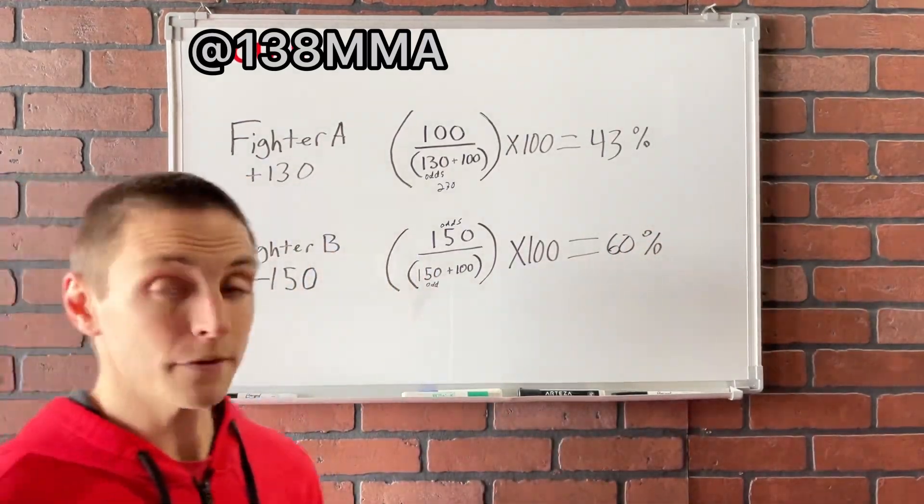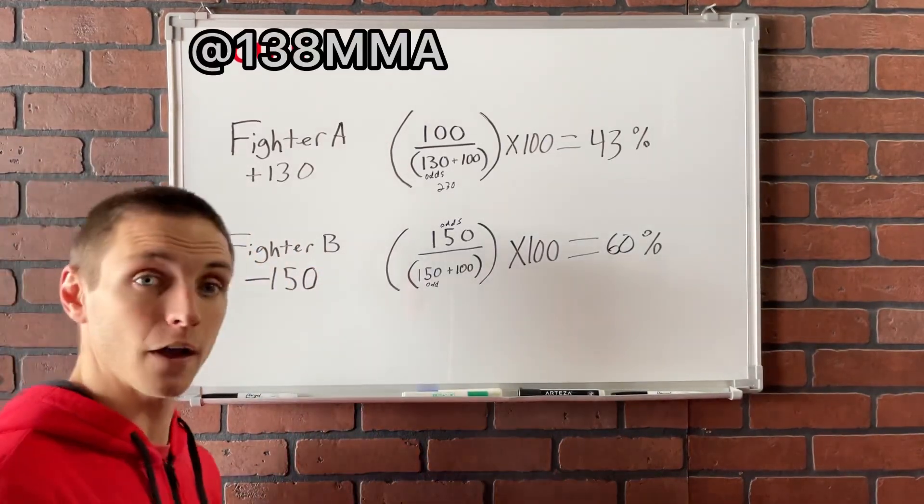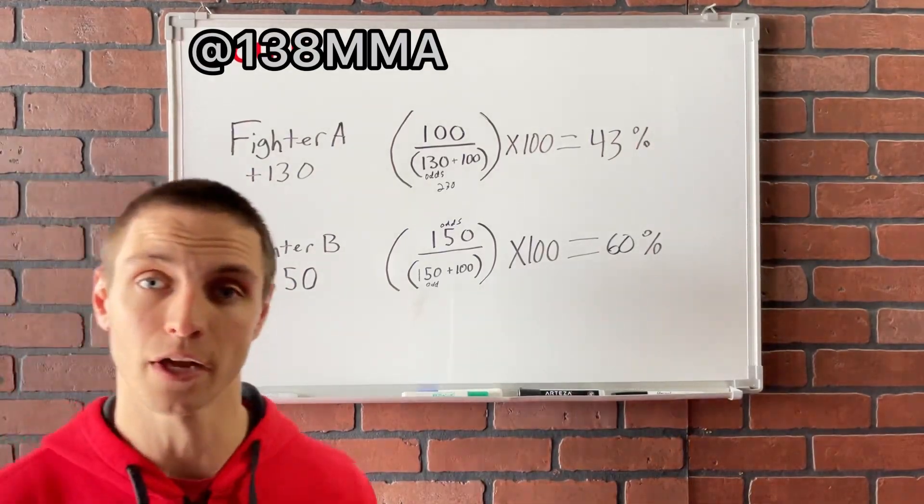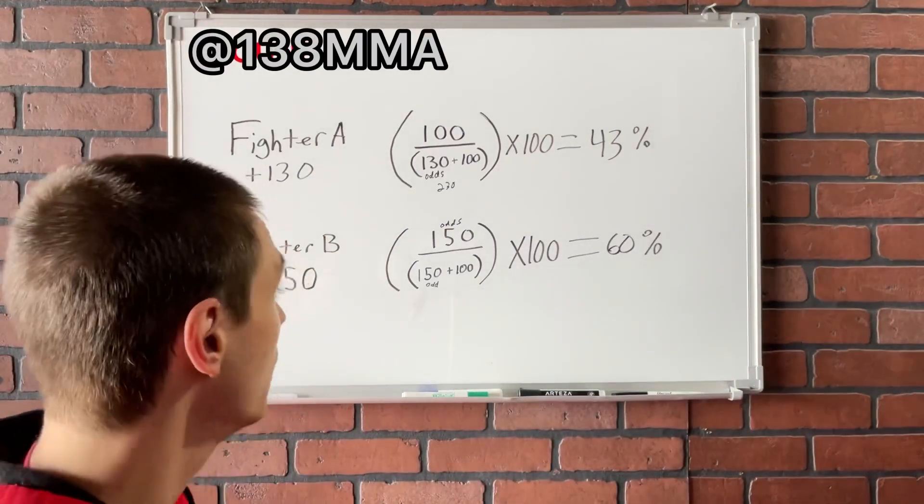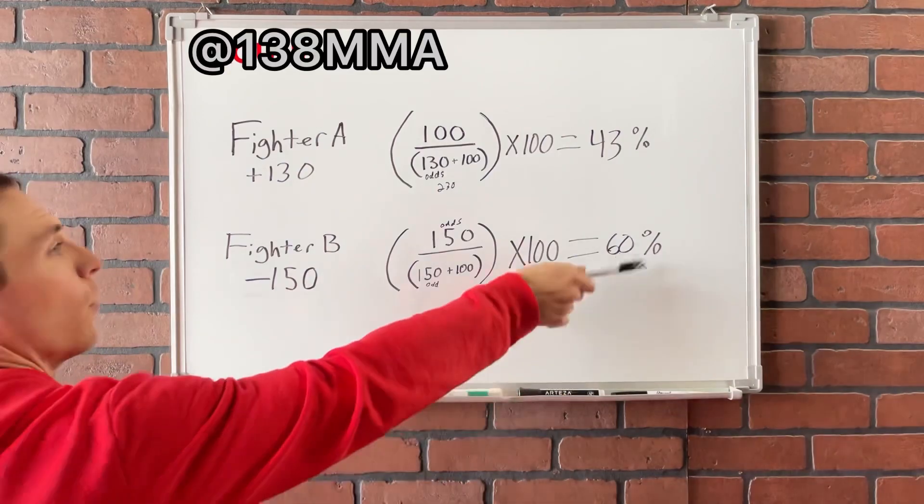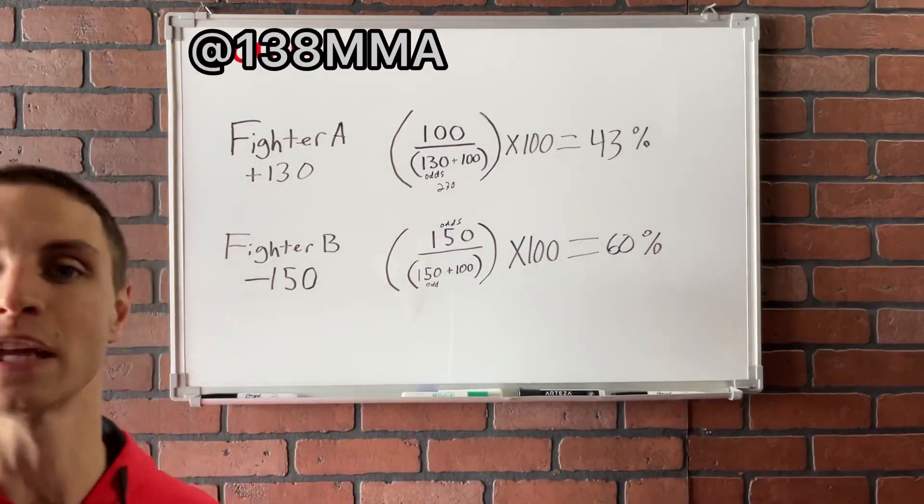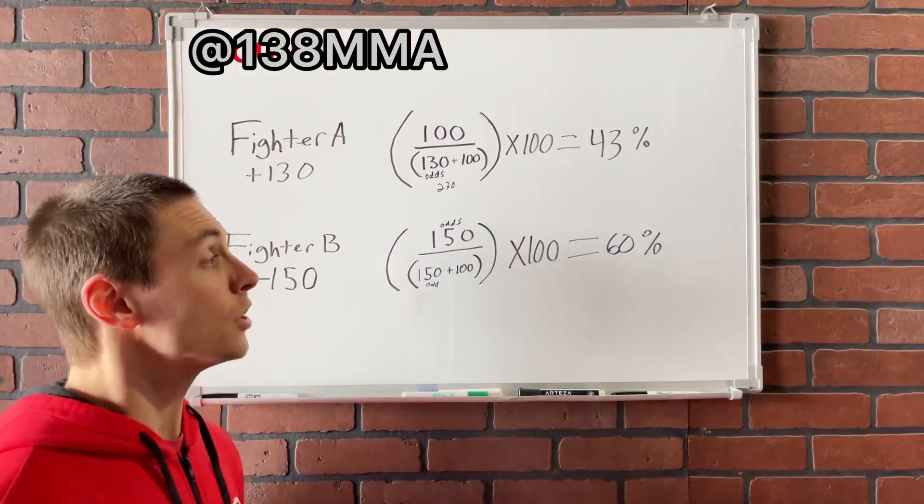So what that means, if these two fought 100 times, fighter B is projected to win 60 out of 100 times. So with that said, and obviously they won't add up to 100 because that's how the house always wins type of thing. So that's how you're going to get that variance there.